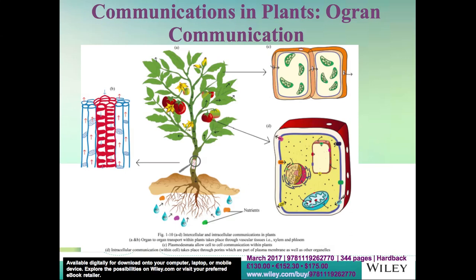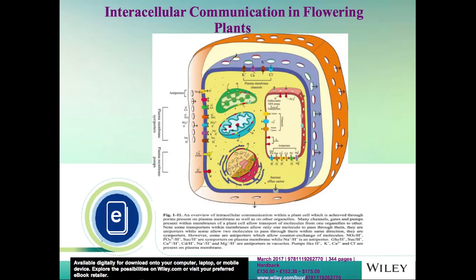Another kind of transport, known as intracellular transport or communication, takes place through a system of intrinsic proteins present not only on the plasma membrane but also on the membranes of all organelles. These intrinsic proteins or porins are shown here in different colors to show their diversity, as there are many kinds present on the plasma membrane, vacuolar membrane (tonoplast), chloroplast membrane, mitochondrial membrane, and nuclear membrane.